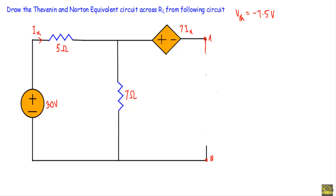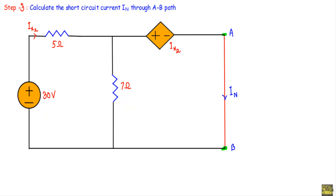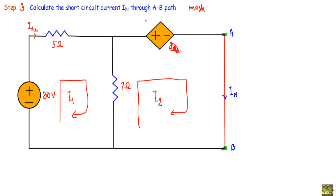To find the Norton current, I connect A and B terminals with a short circuit. The current through the A-B path is In. Using mesh analysis again: mesh 1 has clockwise current I1, mesh 2 has clockwise current I2. The current through the 5Ω resistor is Ix2 = I1, so the dependent source is 10·Ix2 = 10·I1.